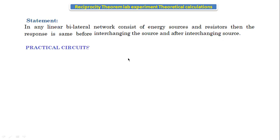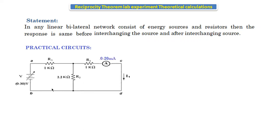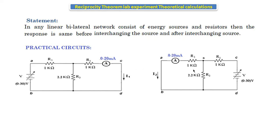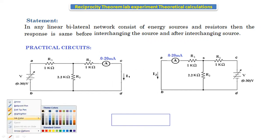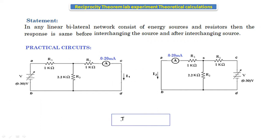Here is the practical circuit. Before interchanging the source, by using an ammeter we calculate the current i1 passing through this branch. After interchanging the source, the current passing through that branch is i2. According to the reciprocity theorem, we have to verify that before interchanging the source the current ix and after interchanging the source the current i2 should be the same.